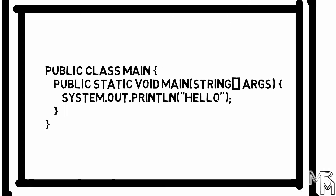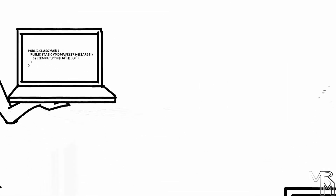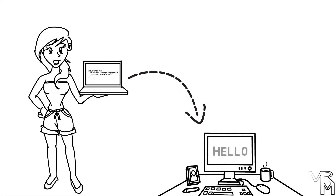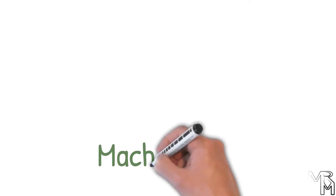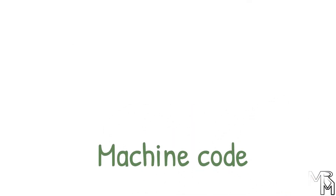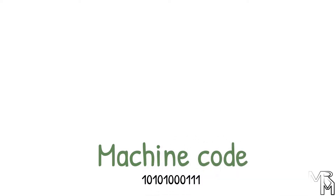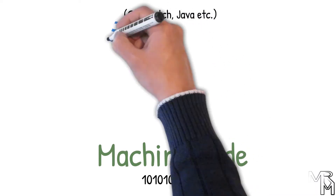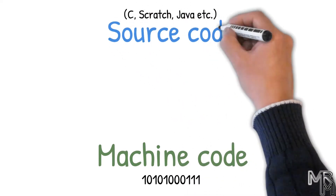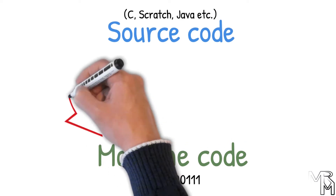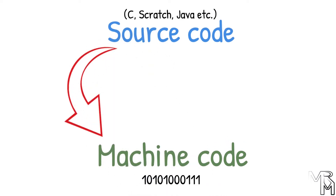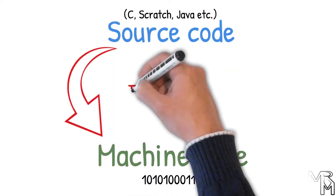You create a piece of code in a language that you are somewhat comfortable with, and then that code is converted into the language that computers can understand. The language that computers understand is called machine code, and any machine code is a sequence of ones and zeros. The code that we create using programming languages such as C, Scratch, or Java is called source code. And the process of conversion of source code into machine code is called translation.